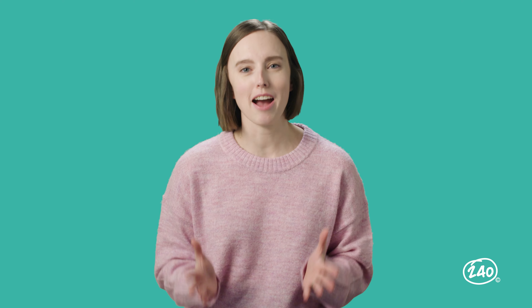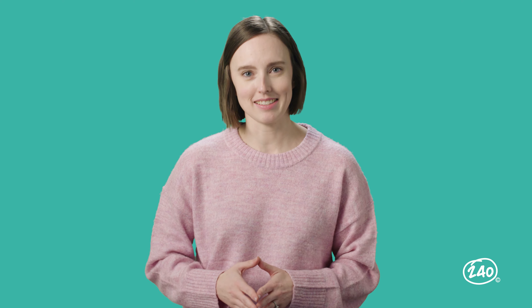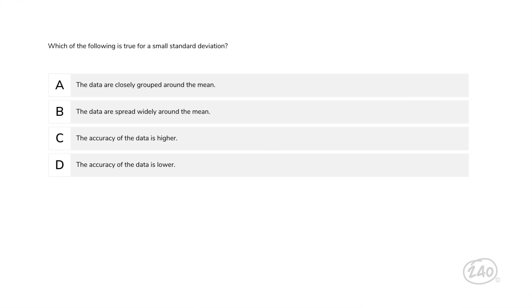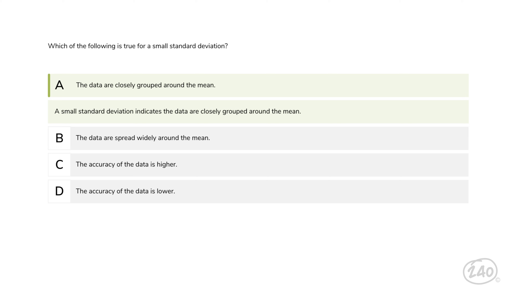You're already halfway there. Keep up the great work. The end of our journey is in sight as we enter domain four, probability and statistics. Which of the following is true for a small standard deviation? A large standard deviation indicates data that are widely spread, which means that a small standard deviation indicates the data are closely grouped around the mean. Therefore, A is the correct answer.